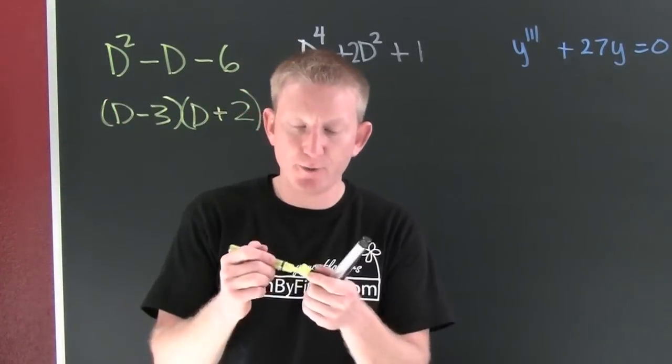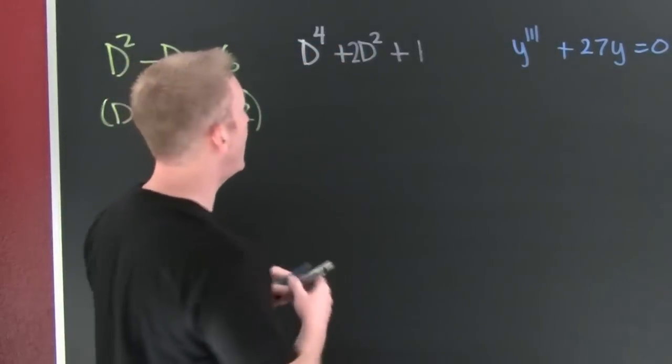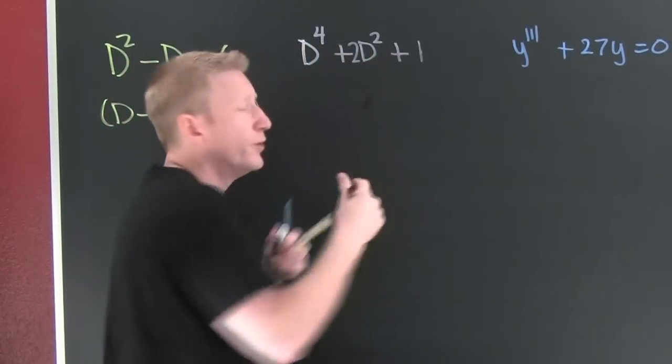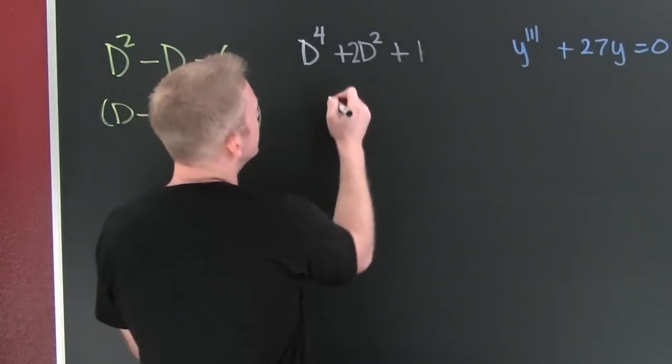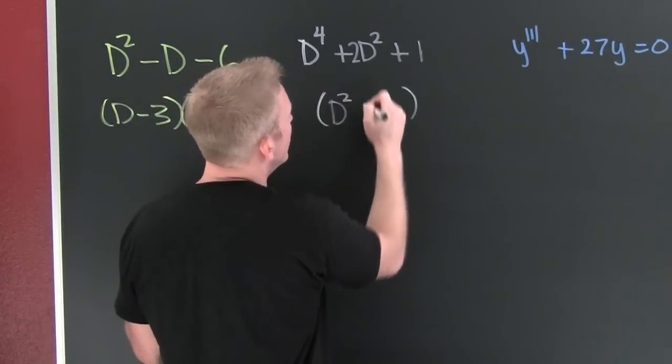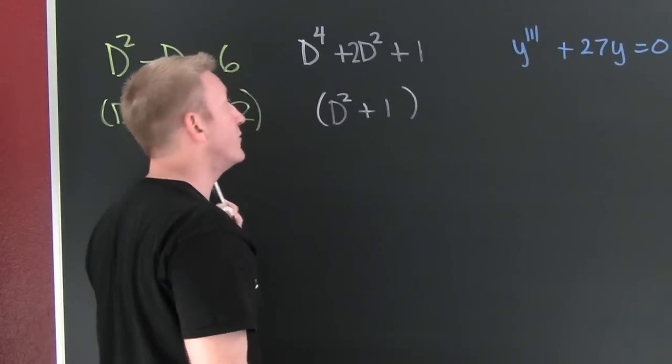Okay, I'm done and I'm on to the next one. I'm looking at this one. Oh boy, that one's screaming perfect square. D squared plus one, yes, that's our old friend.